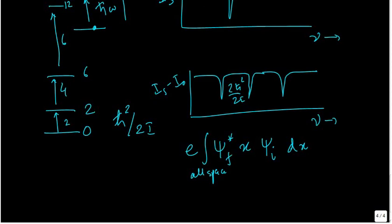So without doing the calculation, I cannot tell you from i to i plus 1, I would say i to i plus 1, i plus 3. Not i to i plus 2, but with the calculation what you get is the delta v is equal to plus minus 1 is what comes out for the harmonic oscillator.